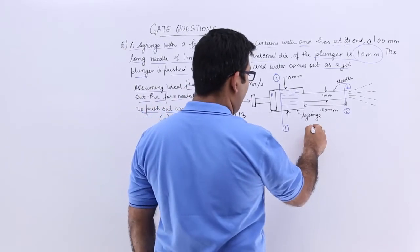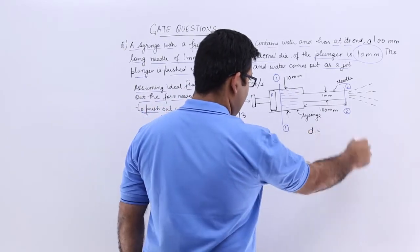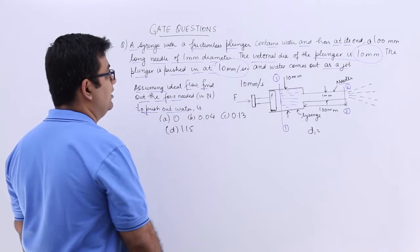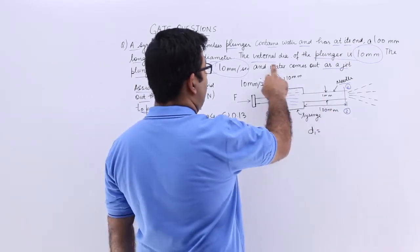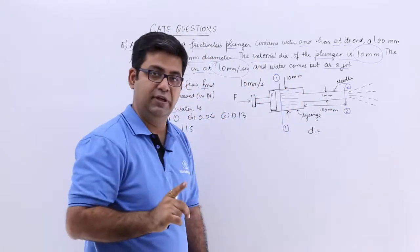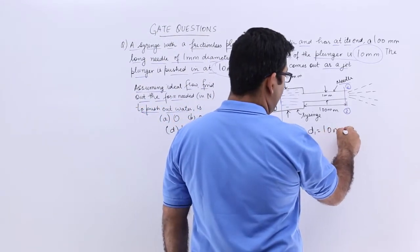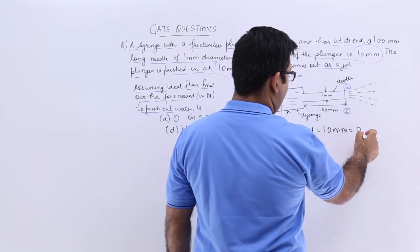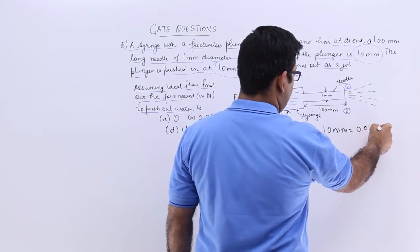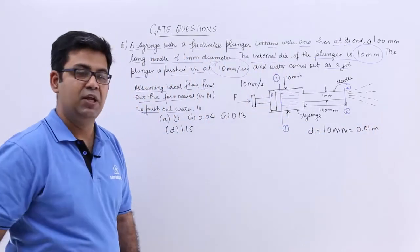So diameter of syringe which is D1. D1 is how much? Which is equal to the internal diameter of the plunger, that is 10 mm. So you have 10 mm which would be 0.01 meters.